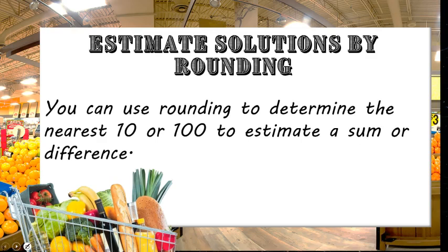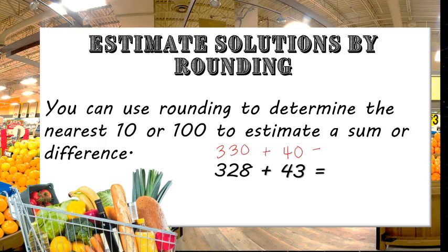For example, take 328 plus 43. If we round to the nearest 10, 328 rounds to 330, and 43 rounds to 40. Those numbers are much easier to add. 330 plus 40 equals 370.